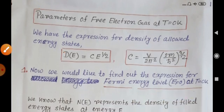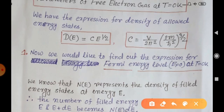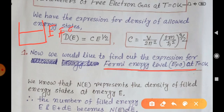Now we would like to find out the expression for Fermi energy level Ef0 at T equal to zero Kelvin. The Fermi energy level is the highest filled energy level at absolute zero temperature. This is Ef0 and we want to find the expression for it.